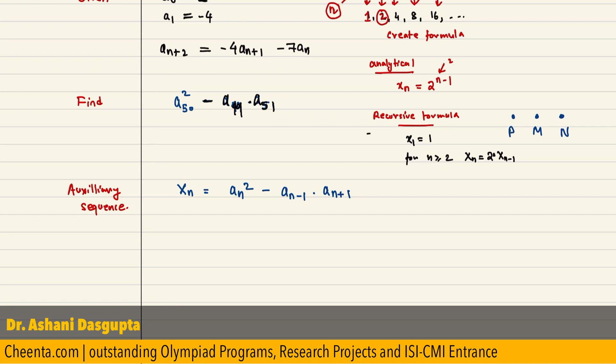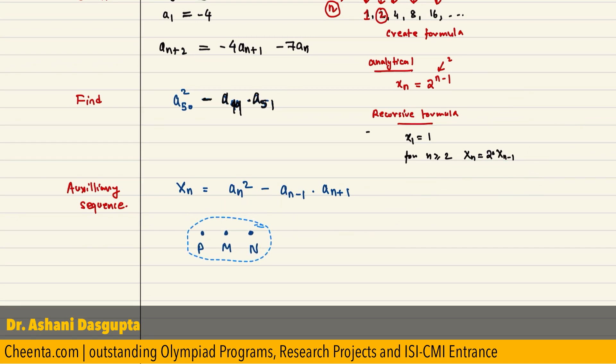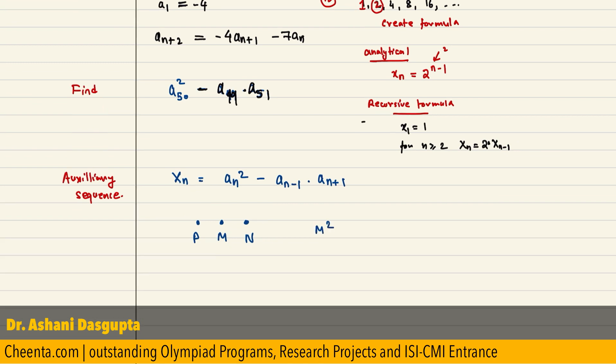what you want is the middle term square minus the previous one times the next one. That's exactly what I have written here.